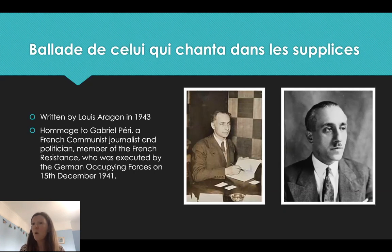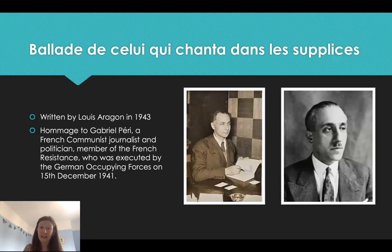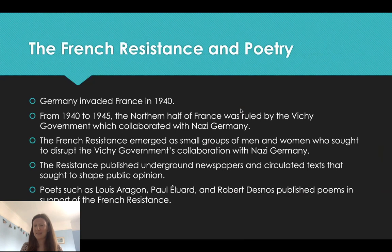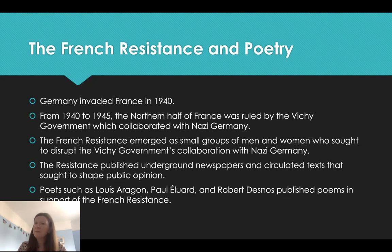This poem is going to be a commemoration of Péry's role in the resistance. There are two pictures here — the photograph on the right is of Gabriel Péry, the person to whom this poem is dedicated, and on the left we have a picture of the poet himself, Louis Aragon. I want to talk briefly about the French resistance and what it was and what it did, because it will be important for understanding this poem.